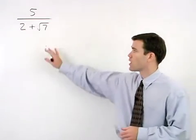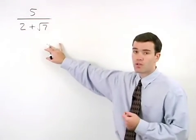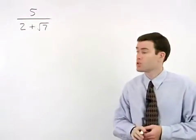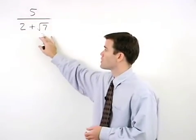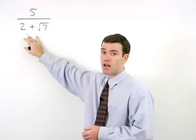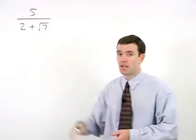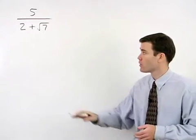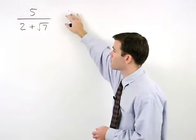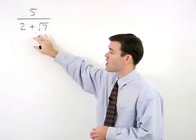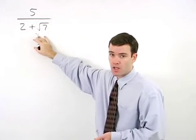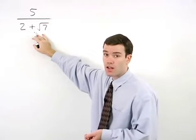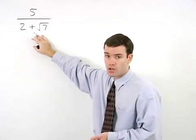To simplify this problem, we must get rid of the radical in the denominator. Notice that there are two terms in the denominator of this fraction. In this situation, in order to get rid of the radical, we must multiply top and bottom of the fraction by the conjugate of the denominator. The conjugate of 2 plus root 7 is 2 minus root 7.